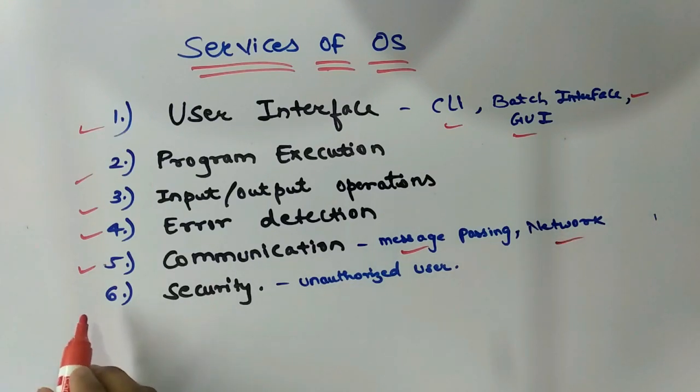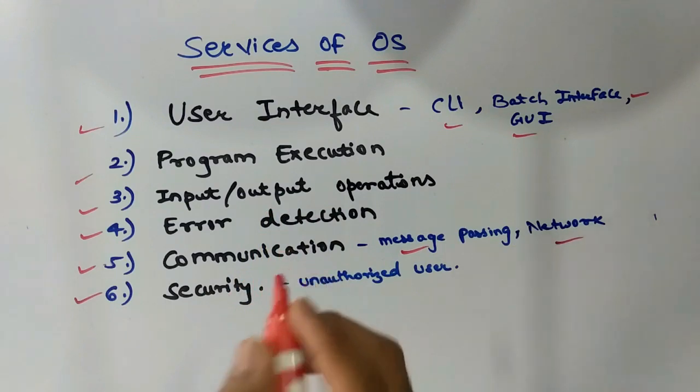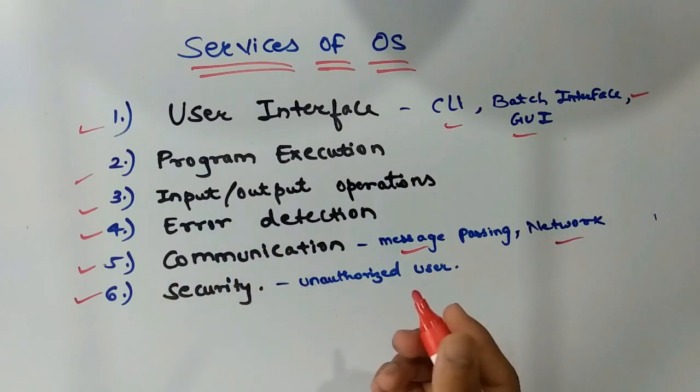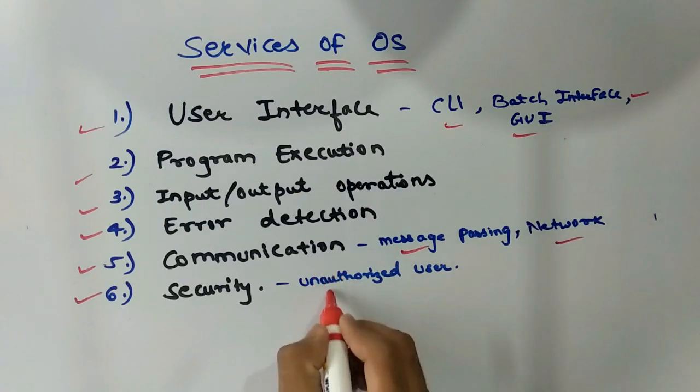The last service of operating system is security. Security of the system from unwanted users requires user authentication. Defending external input output devices from invalid access is important. So this was all about the services of OS.